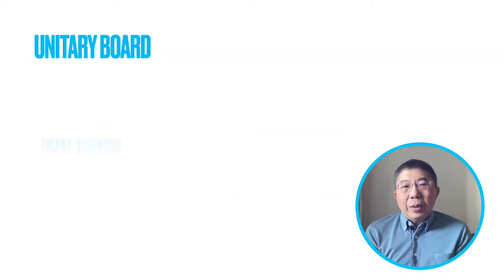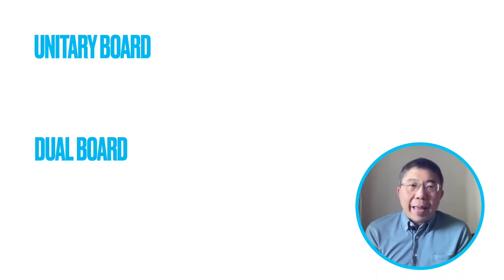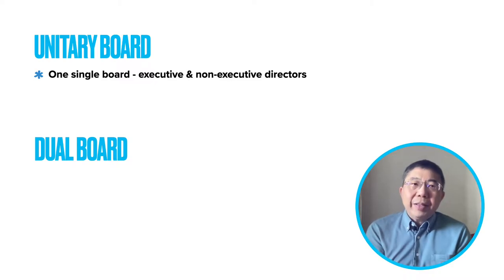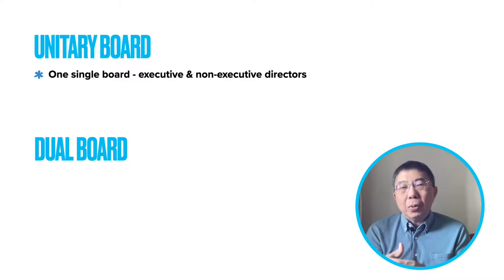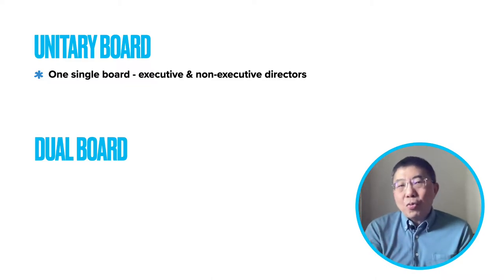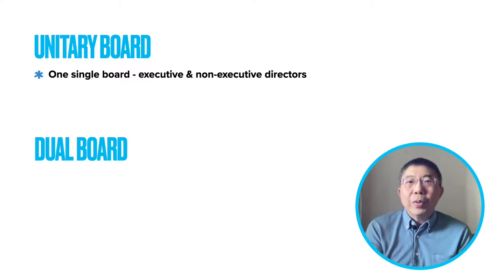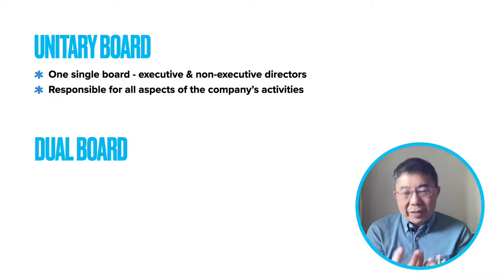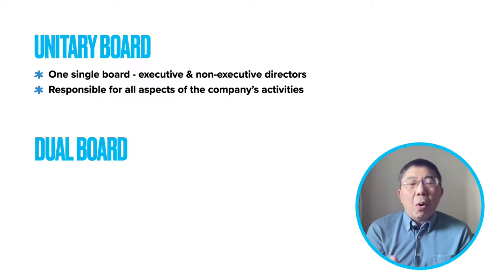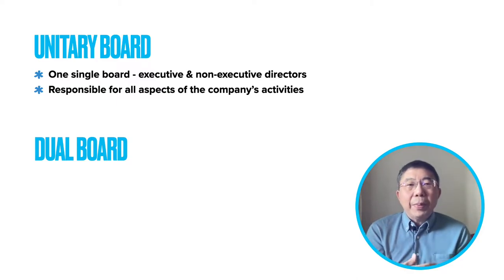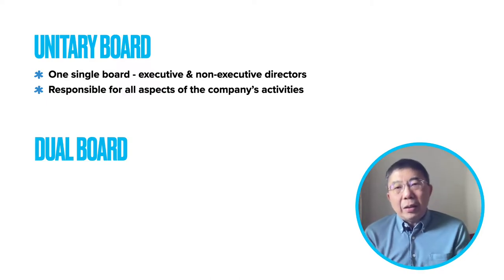Let's first look at the difference between a unitary board and a dual board. A unitary board, as the name suggests, is having one single board comprising executives — people in charge of the day-to-day running of the company — and non-executives who are independent and have no connection with the company. In a unitary board, it is a collective single board responsible for all aspects of the company: monitoring, setting direction, and overseeing the day-to-day running of the business.